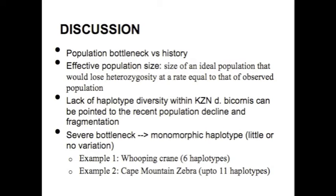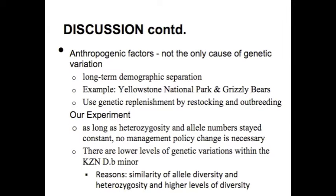In example one, whooping cranes had up to six haplotypes in pre-bottleneck samples, reduced to one post-bottleneck. In example two, cape mountain zebras had a smaller remnant population with only a single unique haplotype, while the related Hartmann's mountain zebra had up to 11 haplotypes. The lack of haplotype diversity within the KZN D. b. bicornis can be attributed to recent population decline and fragmentation, which increased the rate of genetic drift.